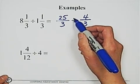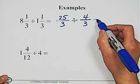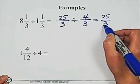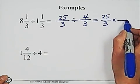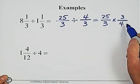Then we need to change the division process to multiplication process. So we write 25 over 3, multiply 3 over 4. Inverting the second fraction, flip over.